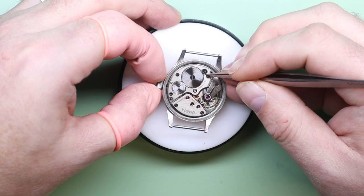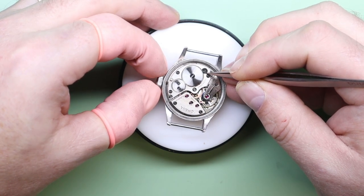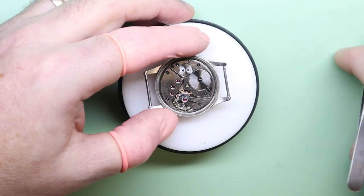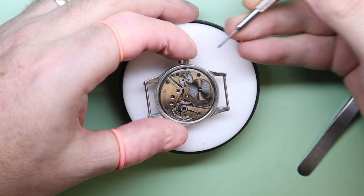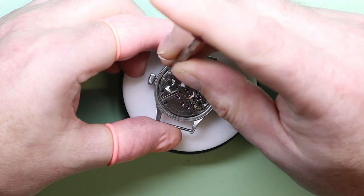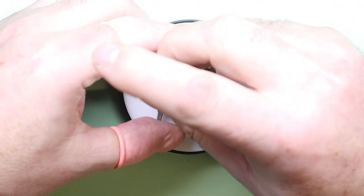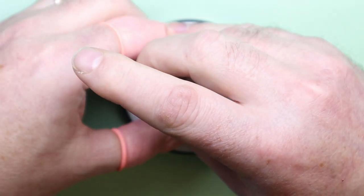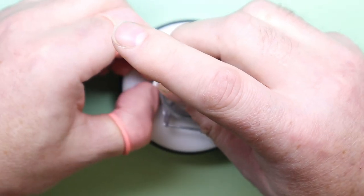I think later versions did become shock protected, but this one isn't. So first thing we do is release all the power from the mainspring and we're going to disassemble the movement and get the dial and hands off once we take it out of the case.